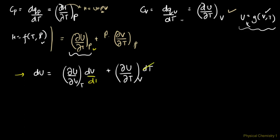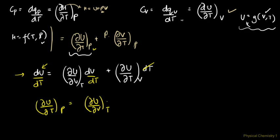When you apply the constant pressure condition and divide by dT, the simple differential changes into a partial differential because U is a function of multiple variables. What you get is: ∂U/∂T at constant pressure equals (∂U/∂V at constant T) times (∂V/∂T at constant P) plus ∂U/∂T at constant volume.